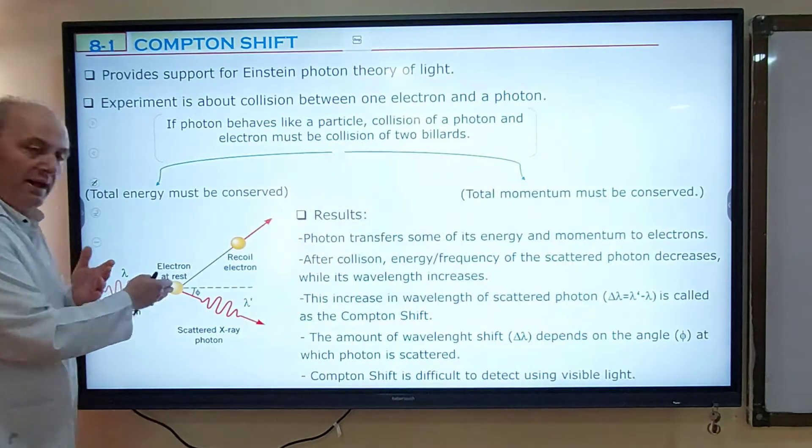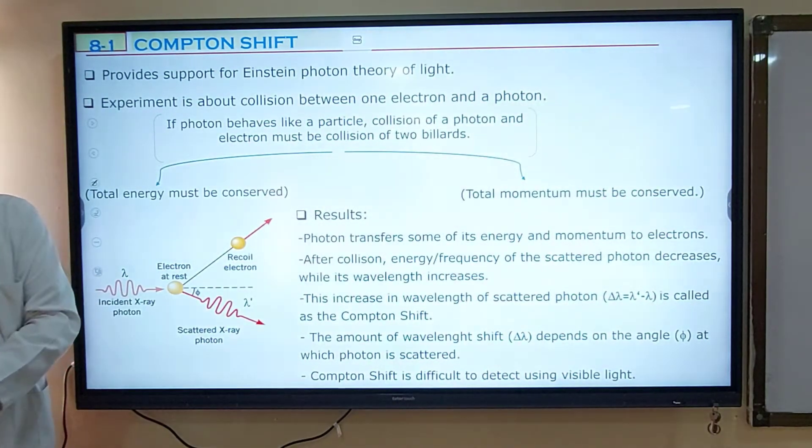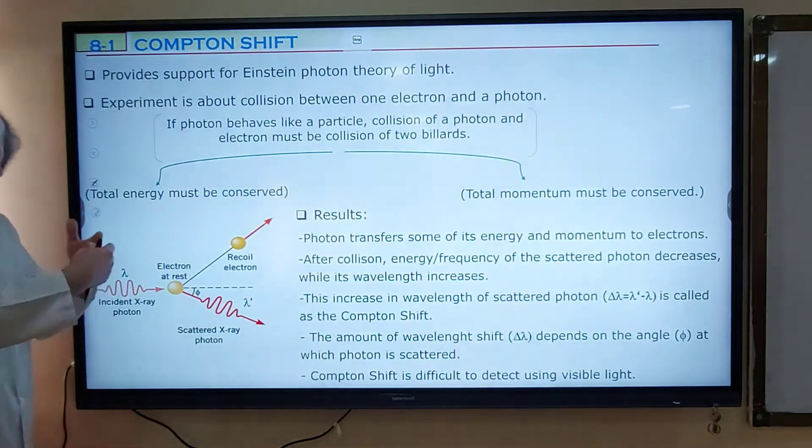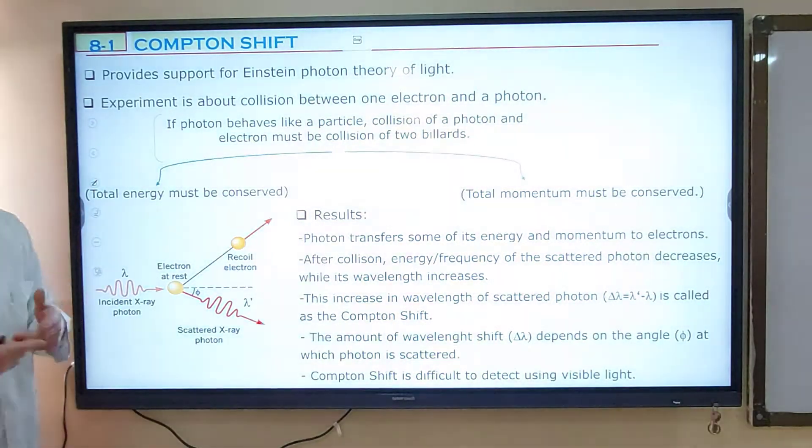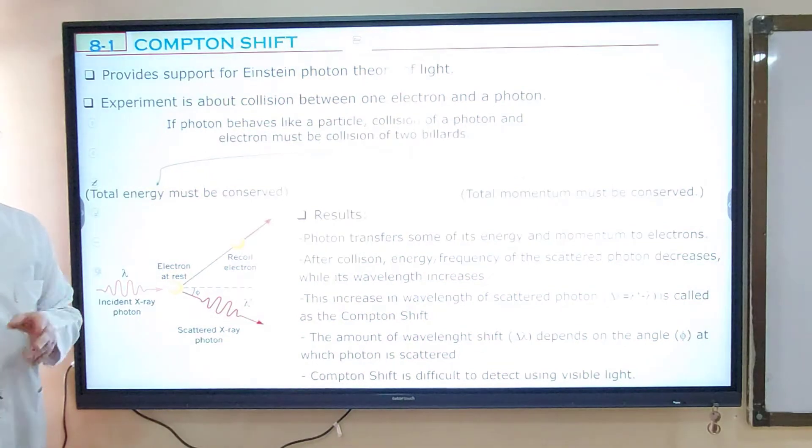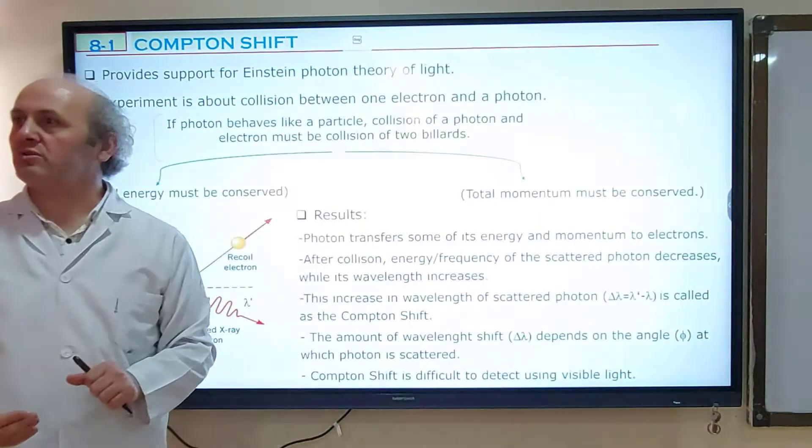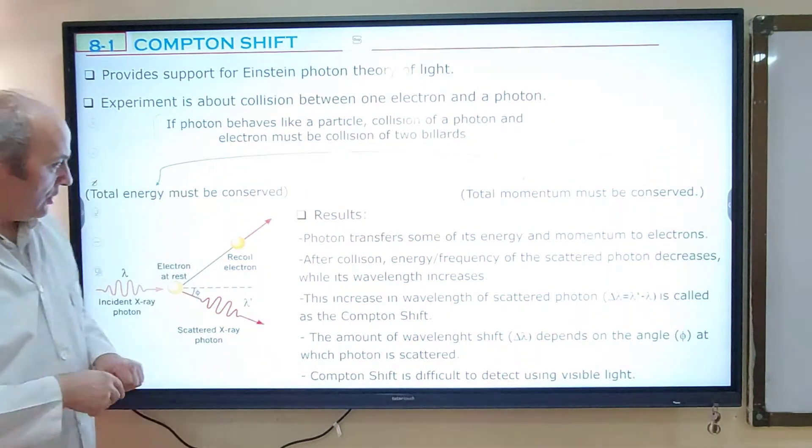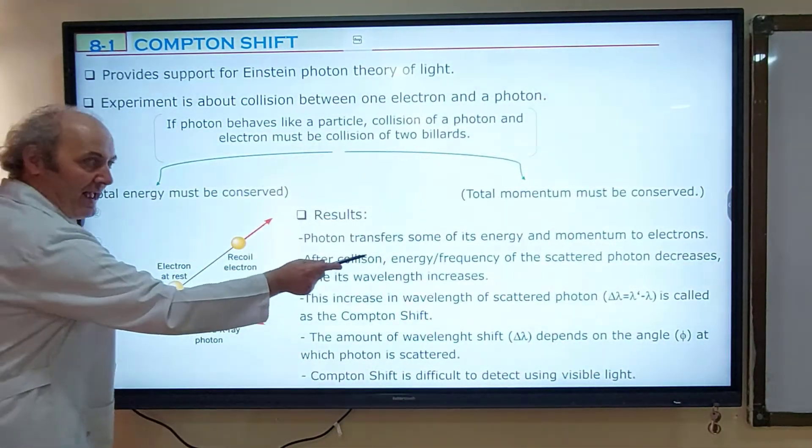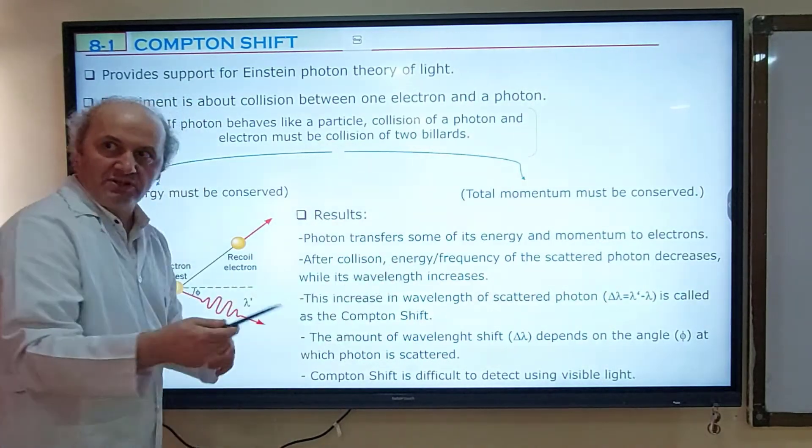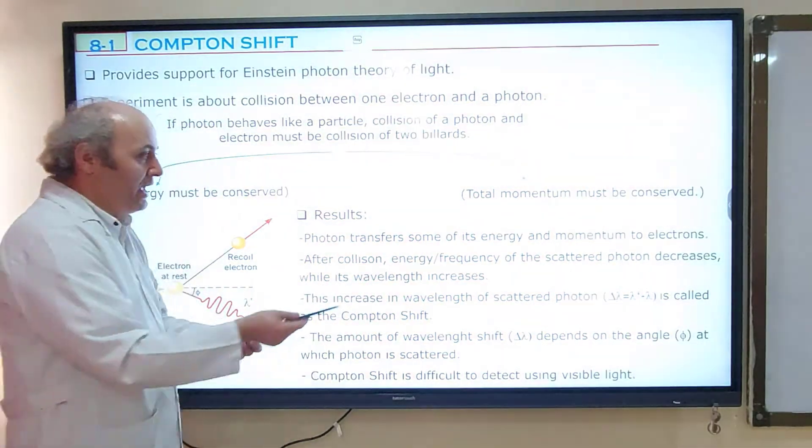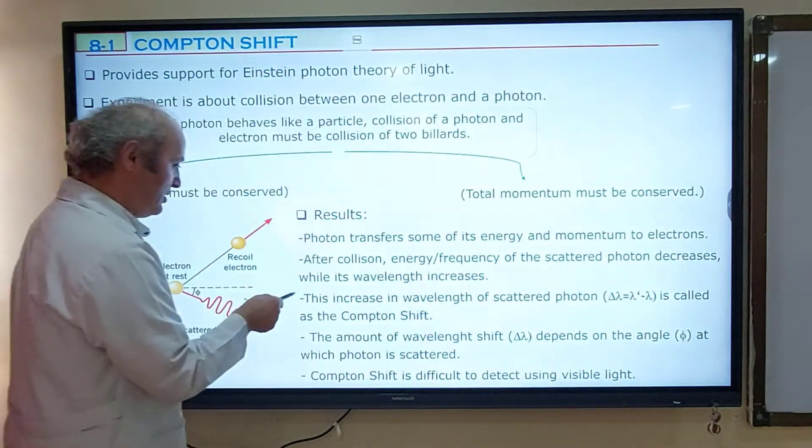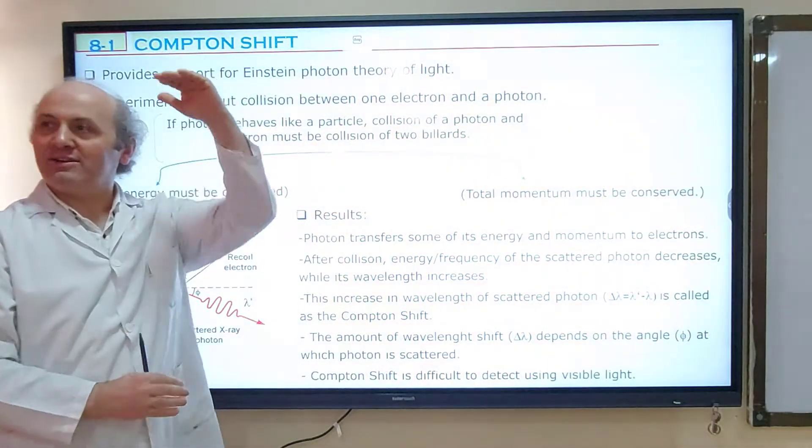Result tells you that photon transfers some of its energy and momentum to the electron, because initially electron is at rest. And where does this energy come from? From the photon. Photon is giving some of its kinetic energy to electron. If some of the kinetic energy of the photon is given to the electron, what happens to the energy of the photon? It decreases. So after collision, energy, of course, energy and frequency are directly proportional. Energy and frequency of the scattered photon must decrease, while its wavelength increases.